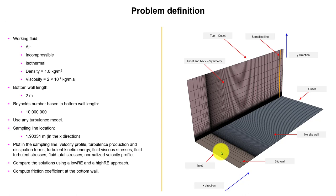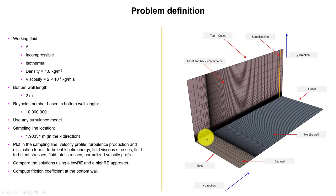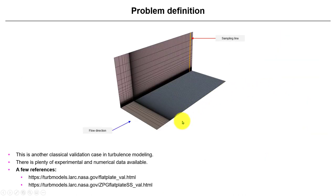I'm not going to give you the geometry details — you can reproduce this geometry easily. Here you have the initial problem definition. We're going to run at Reynolds number 10 million and sample data here. We have some data available that you will be able to download from the website. We can compare friction coefficient but also velocity profiles. Here you have a few references — there is plenty of data to validate this case.